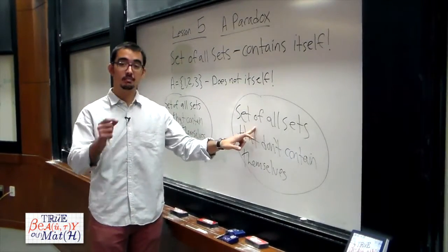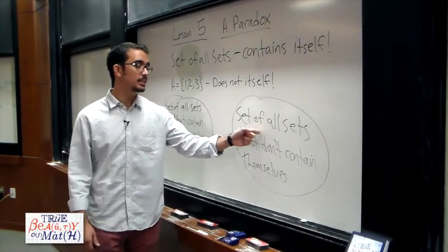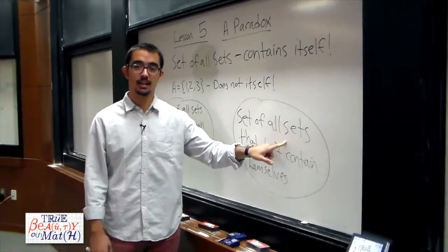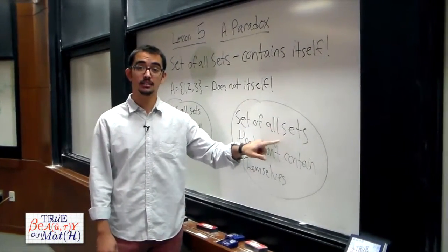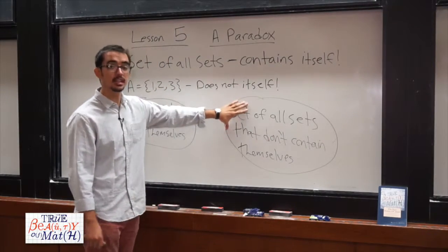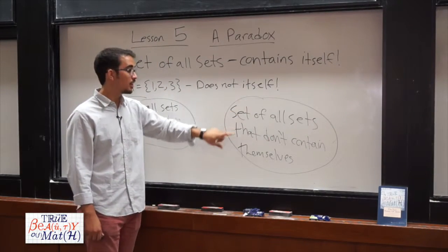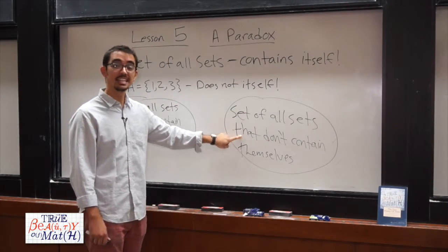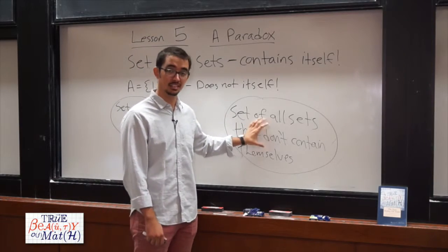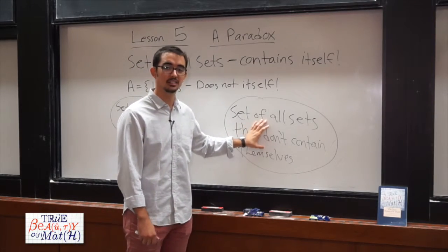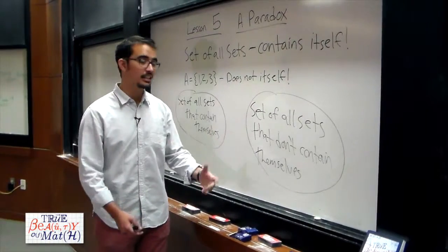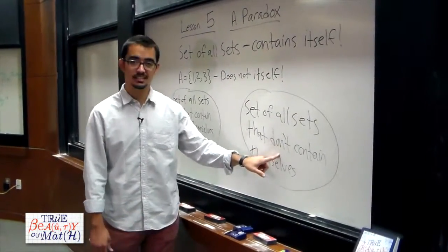But to get to the full paradox, we need to see what happens if we do let this set be an element of the set of all sets that don't contain themselves. Suppose the set of all sets that don't contain themselves is indeed an element of the set of all sets that don't contain themselves. It would then, problematically, contain itself.